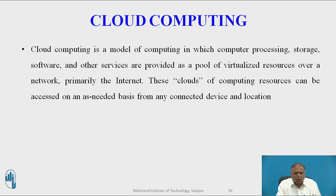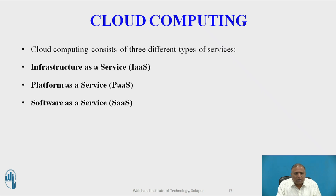Cloud computing offers different types of services. First is Infrastructure as a Service (IaaS), where the customer uses processing, storage, networking, and other computing resources from cloud service providers to run their information systems. Second is Platform as a Service (PaaS), where the customer uses infrastructure and programming tools provided by the cloud service provider to develop their own applications. Third is Software as a Service (SaaS), where the customer uses software hosted by the vendor on the vendor's cloud infrastructure and delivered over a network.